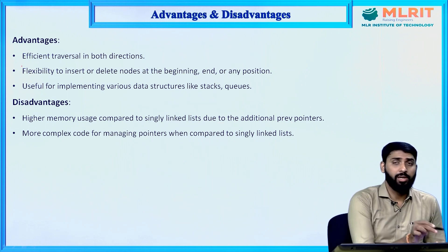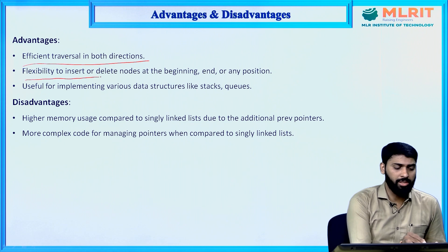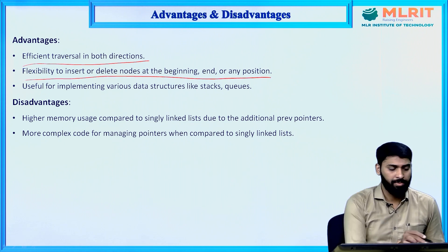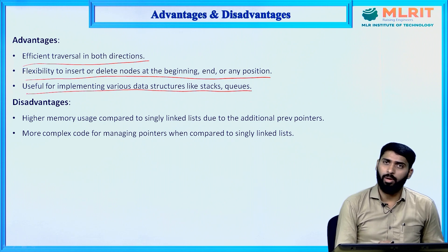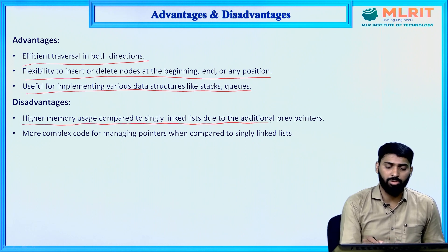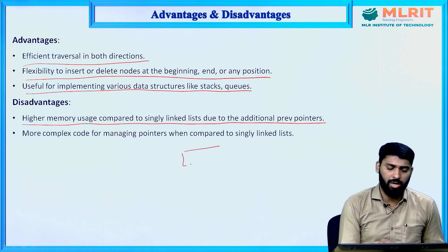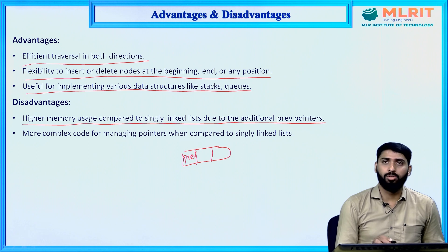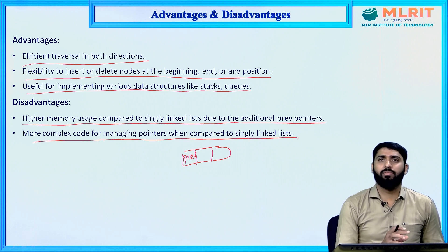Coming to advantages: efficient traversal in both directions — we can traverse either forward or backward. Flexibility to insert or delete nodes at the beginning, end, or any position, and useful for implementing data structures like stacks and queues. Disadvantages: higher memory usage compared to single linked list due to the additional previous pointer. Also, more complex code for managing pointers when inserting data compared to single linked list.